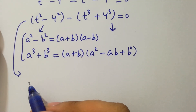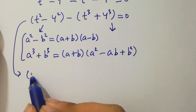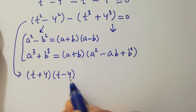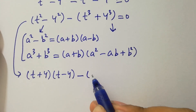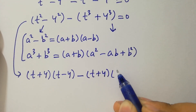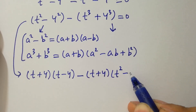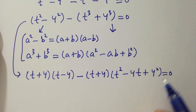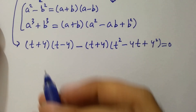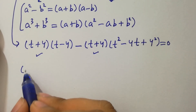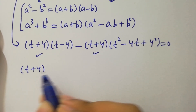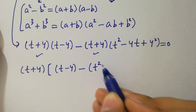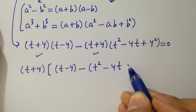Then this equation becomes: t squared minus 4 squared gives t plus 4 times t minus 4, and t cubed plus 4 cubed gives t plus 4 times t squared minus 4t plus 4 squared. So the full expression is t plus 4 times t minus 4 minus t plus 4 times t squared minus 4t plus 16 equals 0.